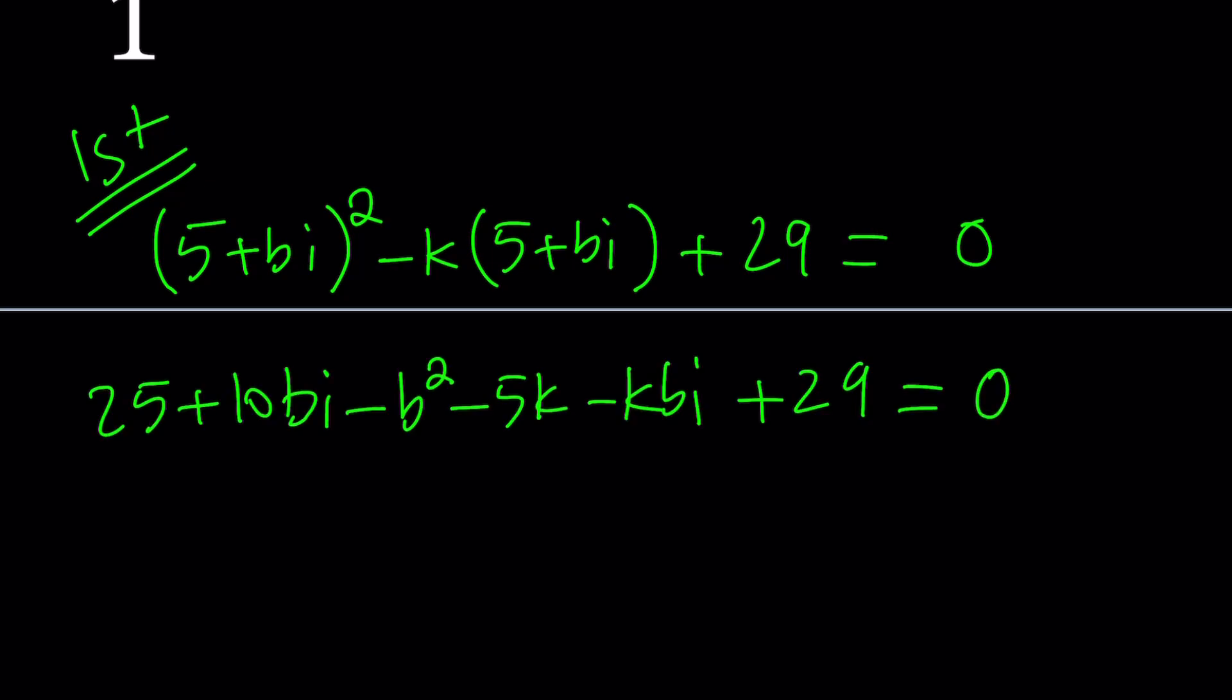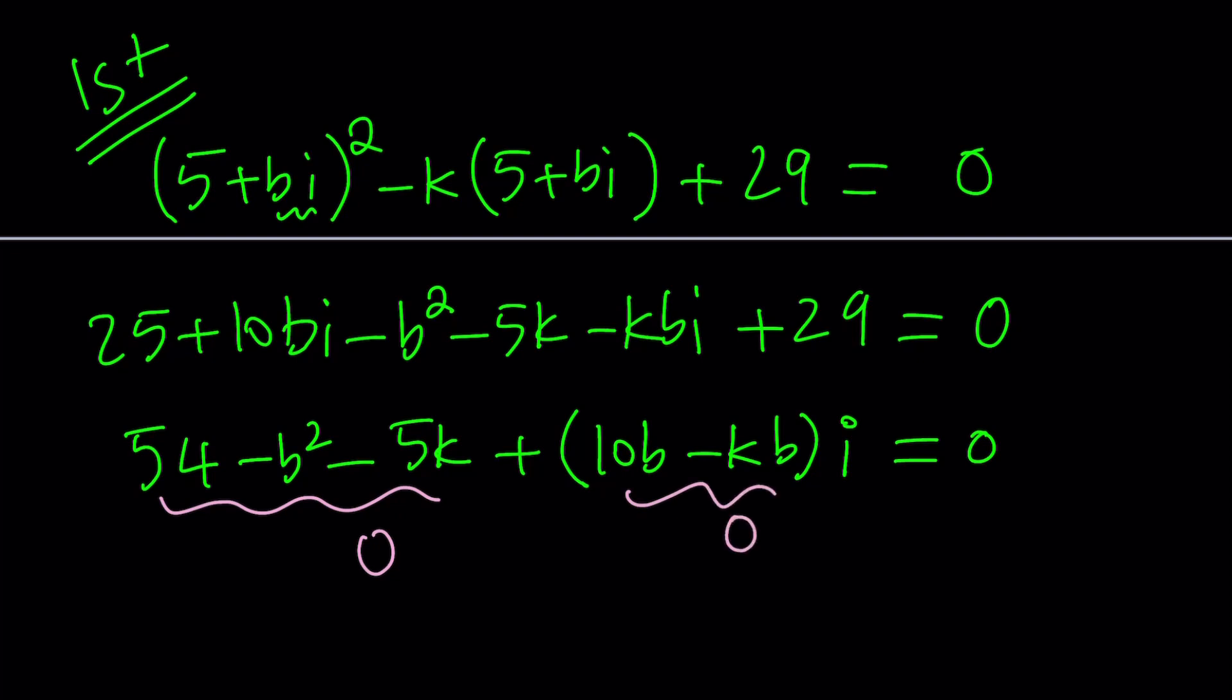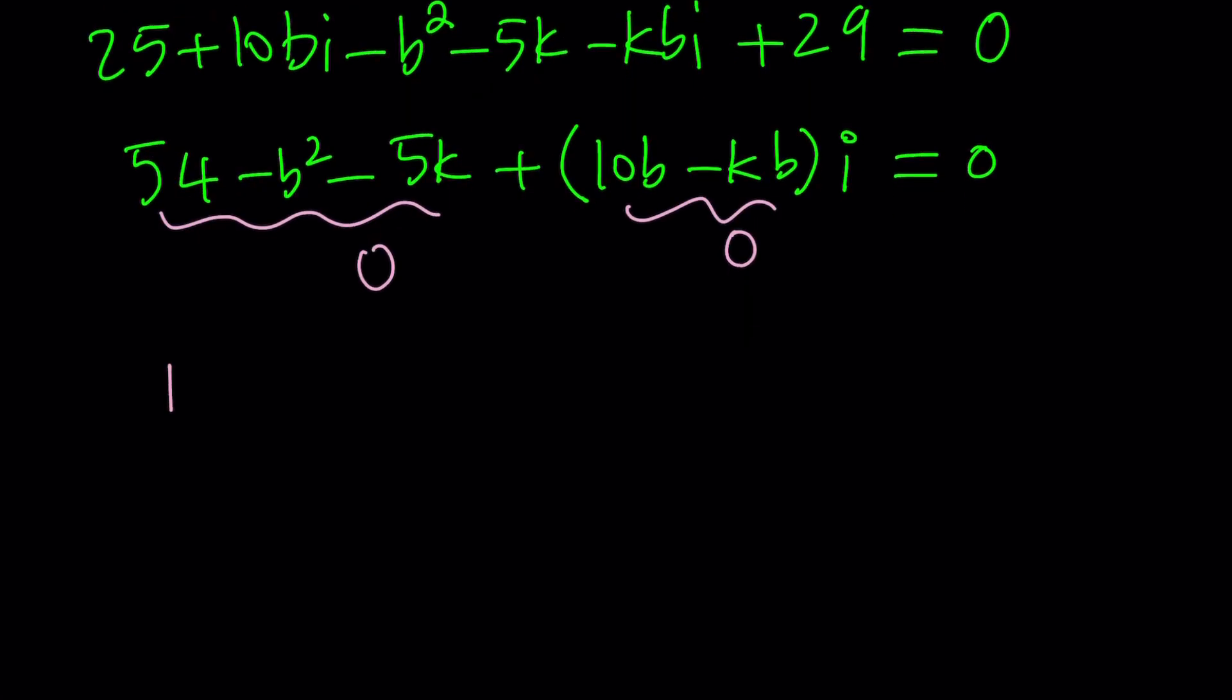I'm going to go ahead and rearrange these terms. By the way, I got b squared i squared from here which I turned into negative b squared because i squared is negative 1. So let's go ahead and arrange the real and imaginary parts. Since we have 0 on the right hand side, we're going to go ahead and set the real and imaginary parts both equal to 0. And from here we get a system of equations.